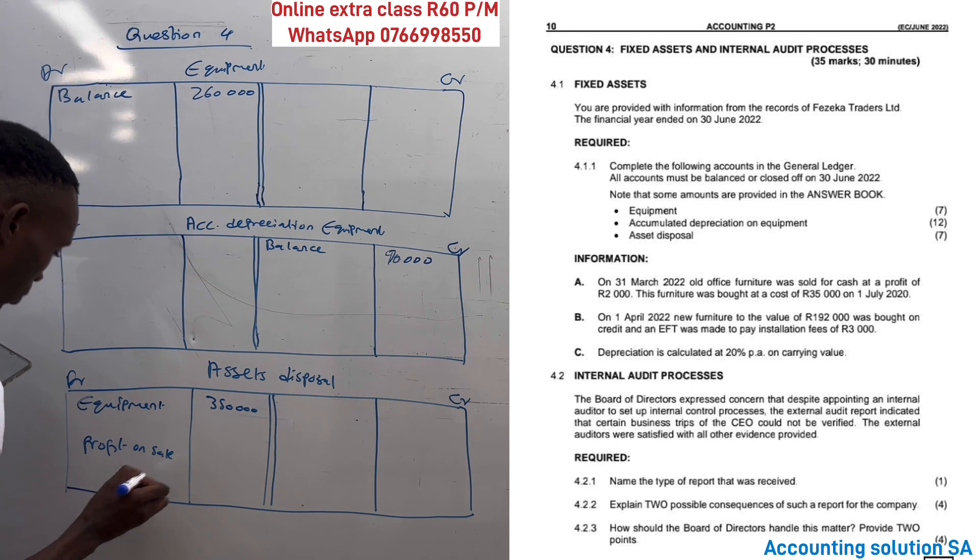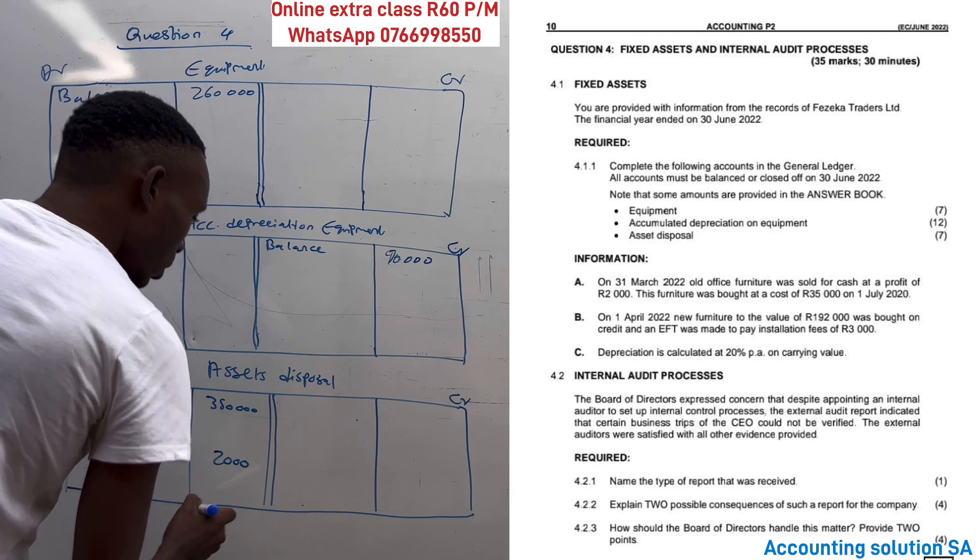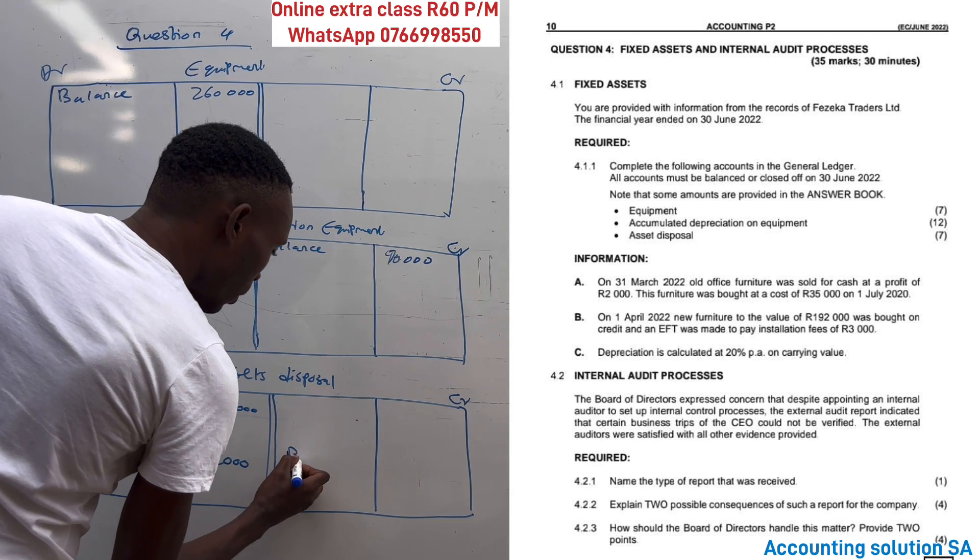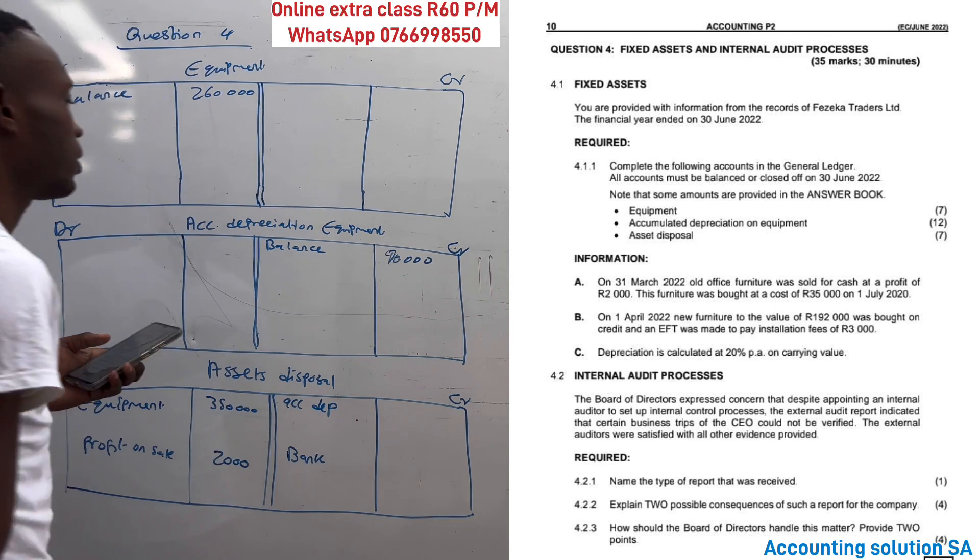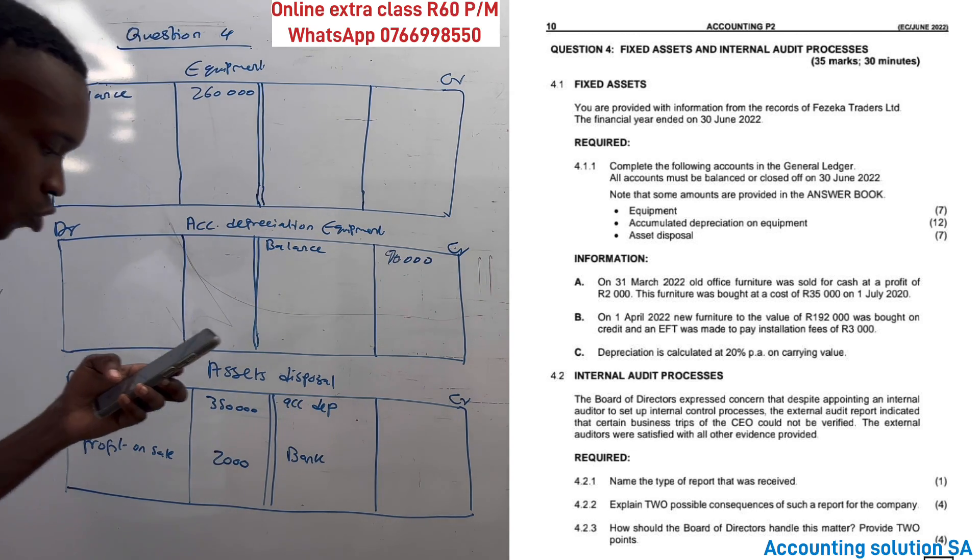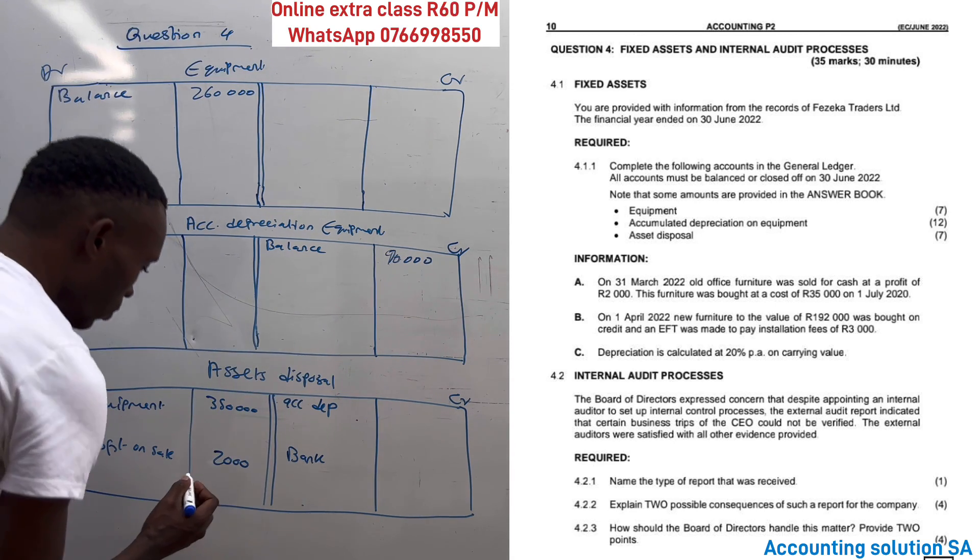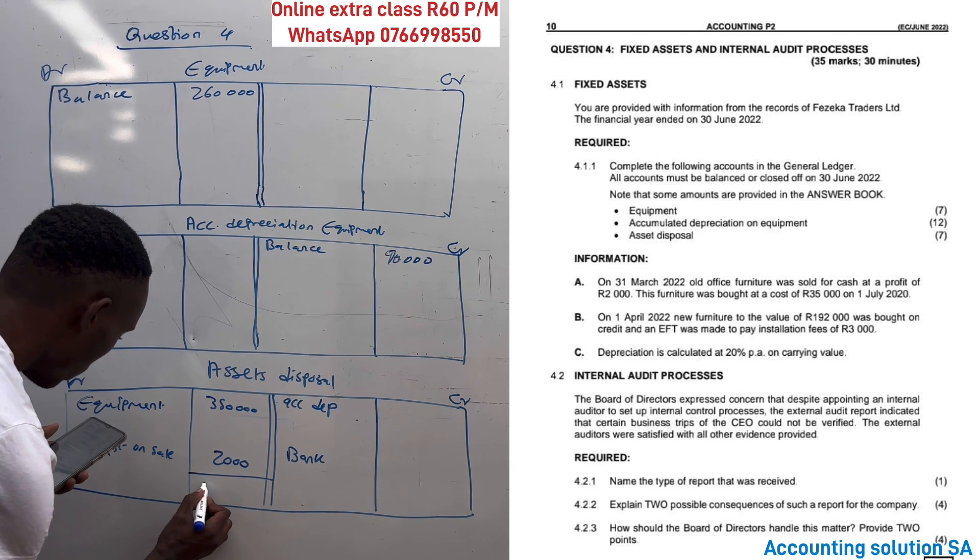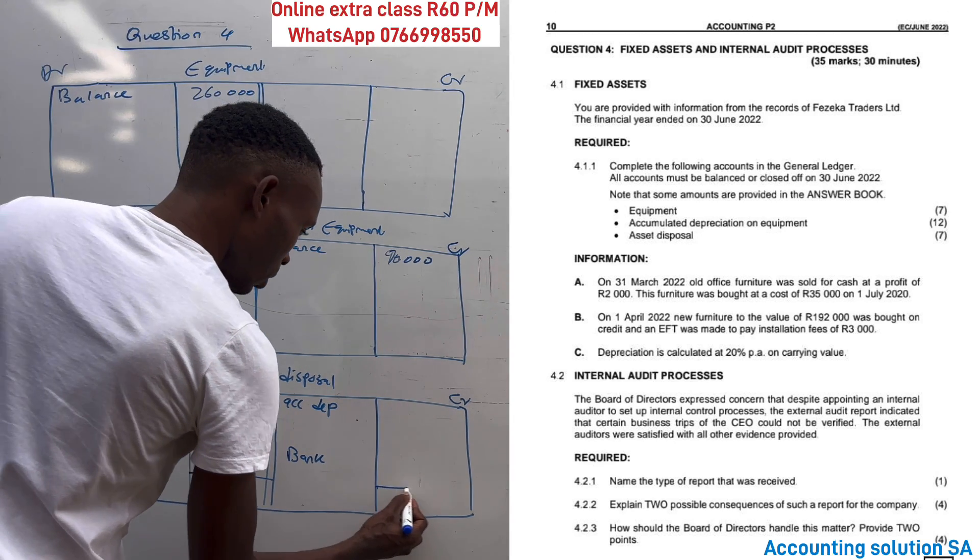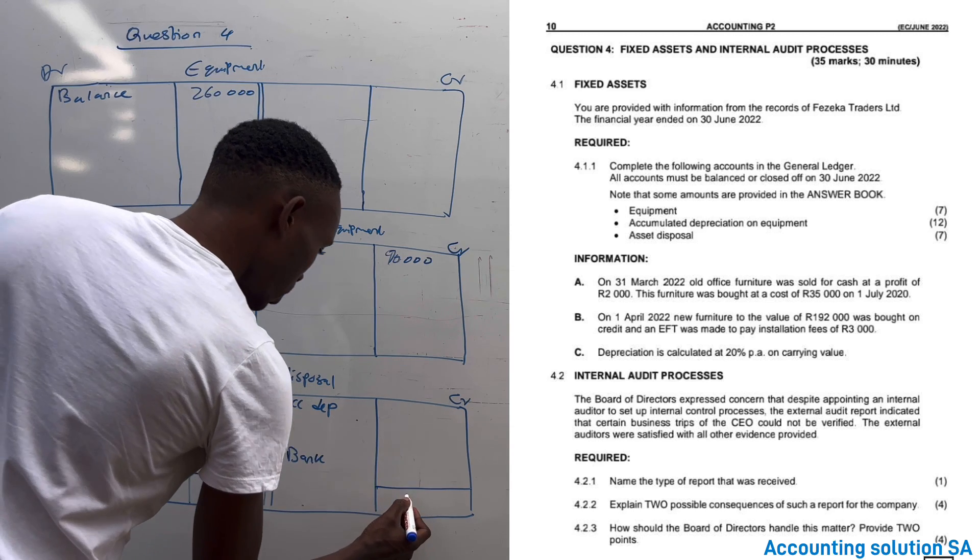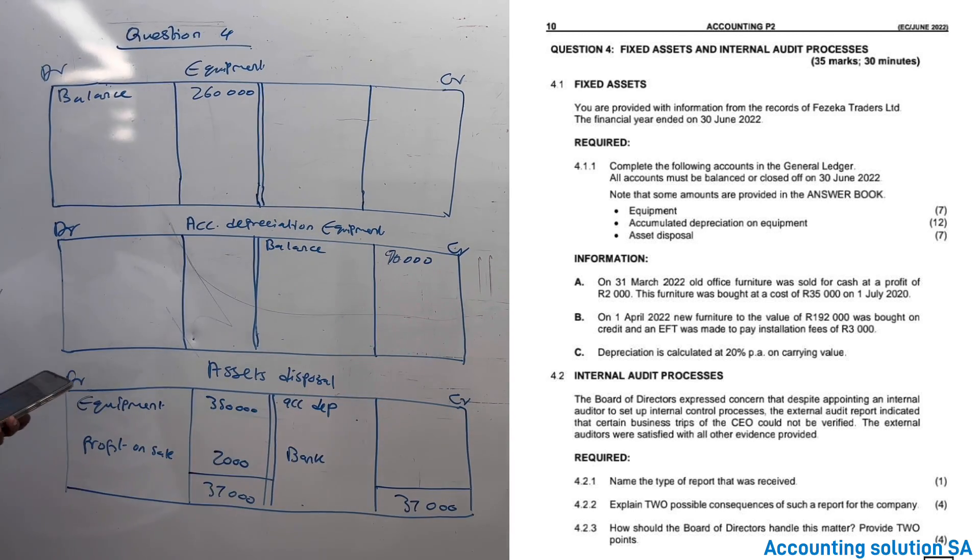And they said it's 2,000. This side we have to record bank as well as business accumulated depreciation. So we have to record bank as well as a balance, so bank we are going to get it as a balancing figure. As you know that this side in total is going to get 37,000 and this side is going to be the same amount of 37,000.